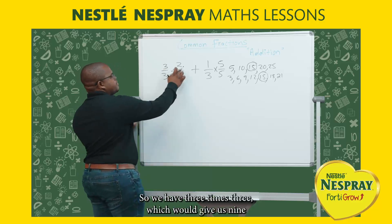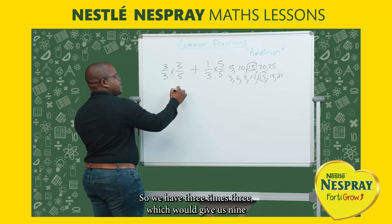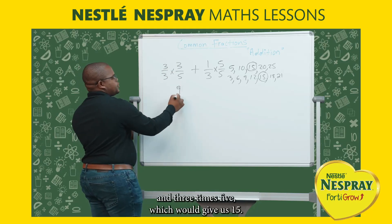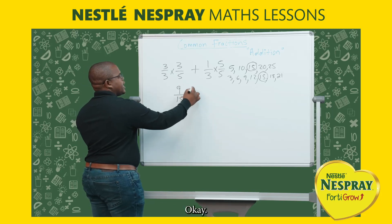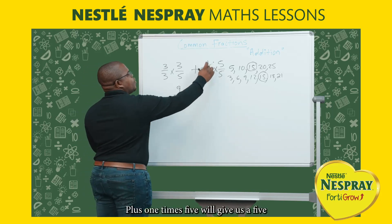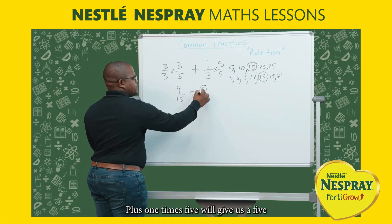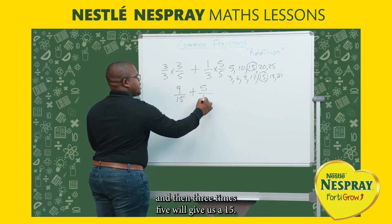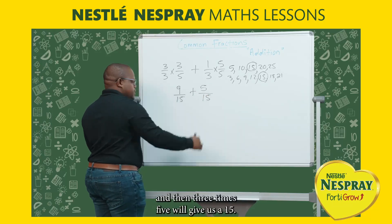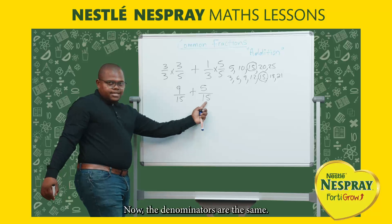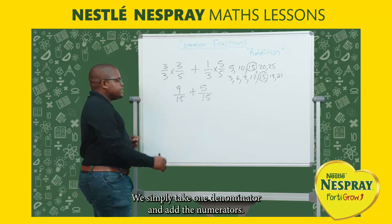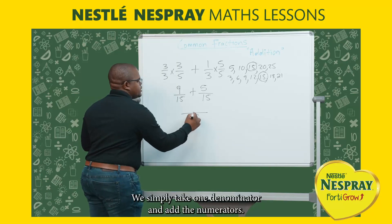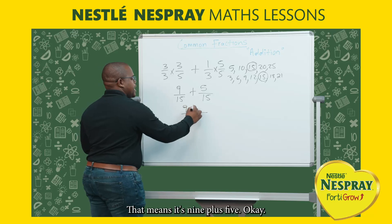So we have 3 times 3, which gives us 9, over 3 times 5, which gives us 15. Plus 1 times 5, which gives us 5, over 3 times 5, which gives us 15. Now the denominators are the same, so we take one denominator and add the numerators: 9 plus 5.